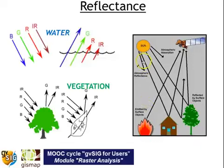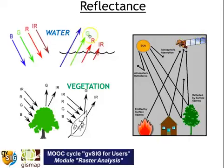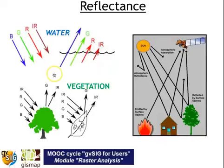Satellite images store the reflectance value of each single feature on the Earth. Each feature has a value of reflectance of the Sun, and these values are stored by remote sensors as different wavelengths. For example, water has high reflectivity in the blue and very low in the infrared, while vegetation, due mainly to chlorophyll, has high reflectance in the green and infrared wavelengths, and very low values in the blue and red.